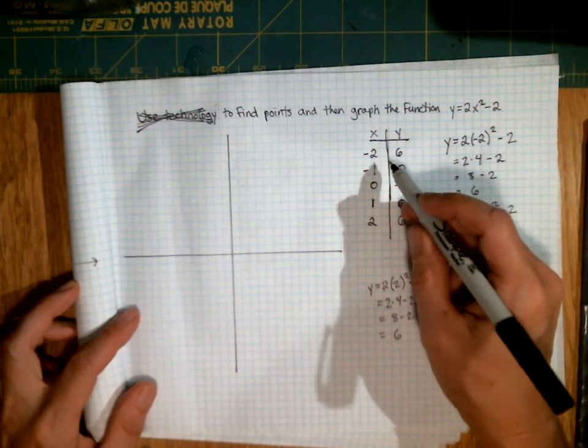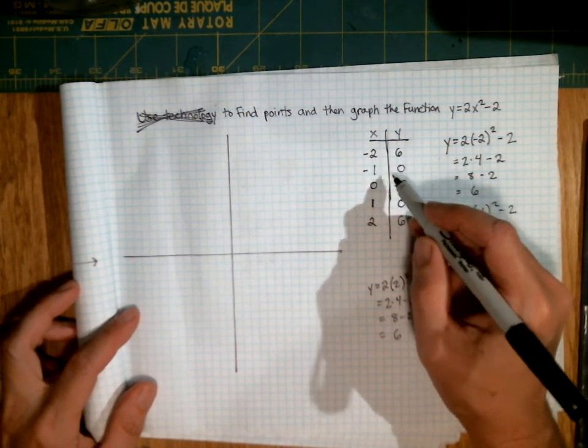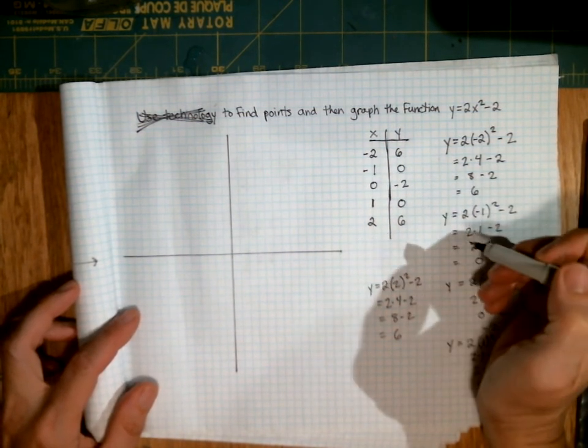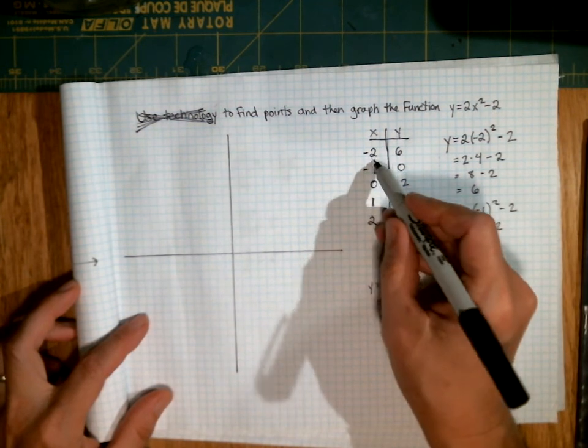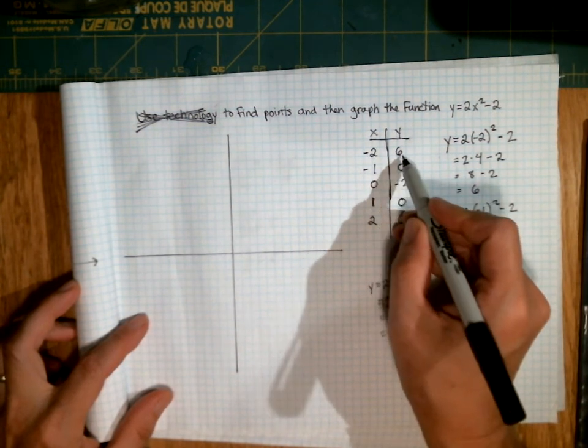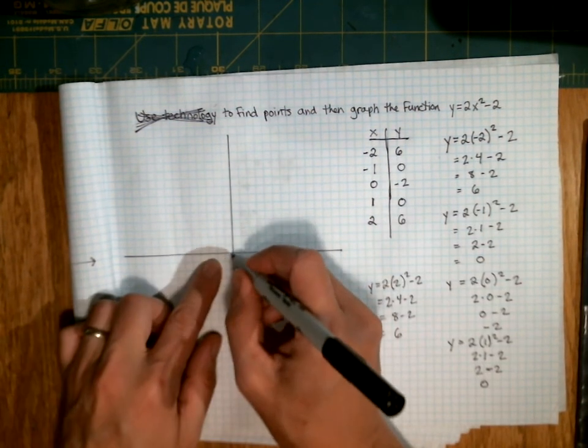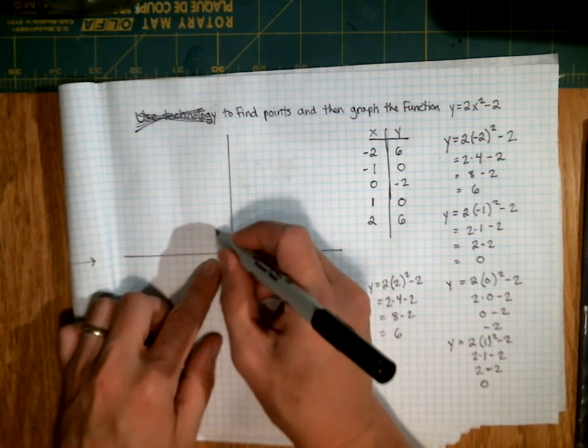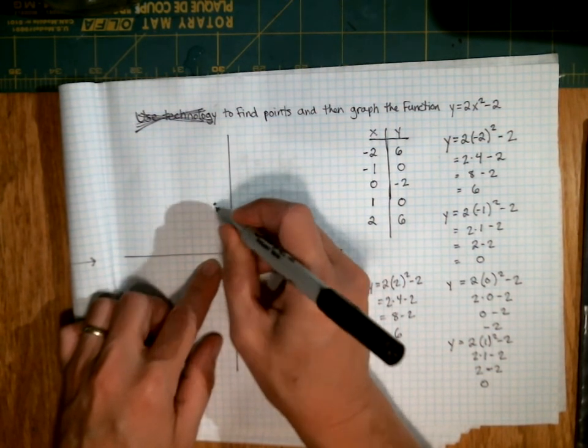So now we're going to plot these points. These are now points in the coordinate plane that we can plot. So to plot this point, this is the point negative 2 comma 6. So I'm going to go back 2 and up 6. 1, 2, 3, 4, 5, 6 and put a point here.